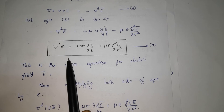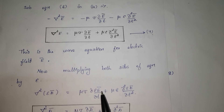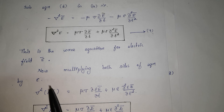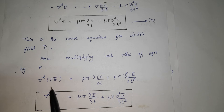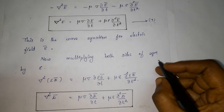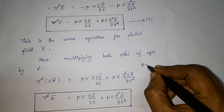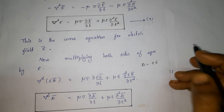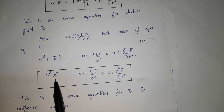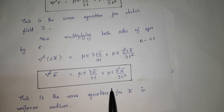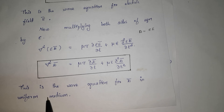Multiplying by minus on both sides, we get the wave equation for electric field E. Next, multiplying epsilon on both sides, we get del squared epsilon E vector equal to the corresponding terms. Since electric flux density D is equal to epsilon times E, we substitute D vector for epsilon E. This gives the wave equation for D in a uniform medium. This completes the wave equation for electric field.